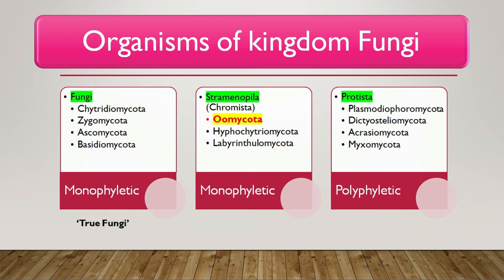The other organisms like Oomycota, Hyphochytriomycota, and Labyrinthulomycota, which were earlier called fungi, are now kept in the kingdom Straminopila or Chromista. So Oomycota is in kingdom Straminopila. Oomycota, Hyphochytriomycota, and Labyrinthulomycota are monophyletic — they have one common origin and share common characteristics.